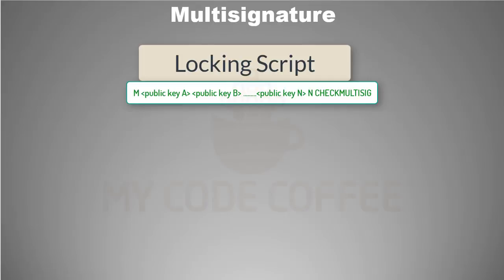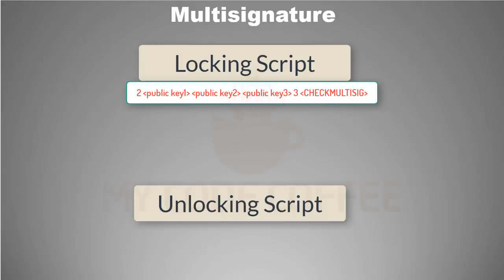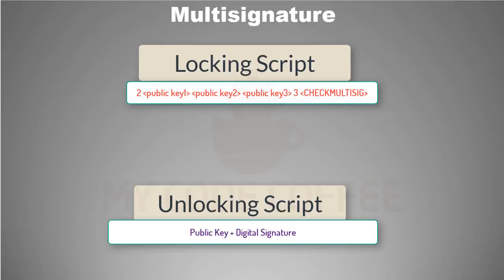So in this case the locking script will look like this. If you remember from the previous chapter, the unlocking script has a public key and a digital signature — but that was for a locking script for a single public key. As you can guess, in this scenario the unlocking script will have more than one pairs of digital signatures and public keys. For an m-of-n locking script, the corresponding unlocking script will look like this.